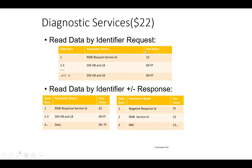For the response, as per the UDS standard, 0x40 is added to 0x22, giving 0x62 as the response service ID. This is followed by the two-byte DID number and then its data record. For a negative response, the format is 0x7F followed by the service ID 0x22 and then the NRC code, such as 0x13, 0x22, 0x33, etc.